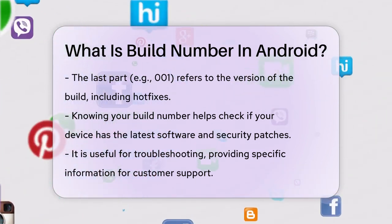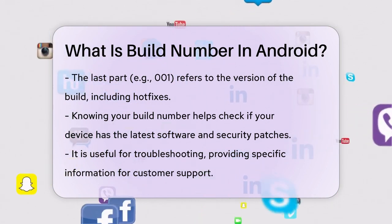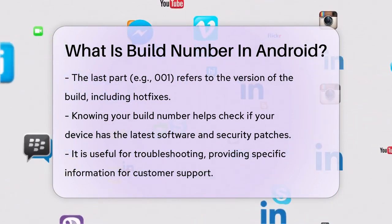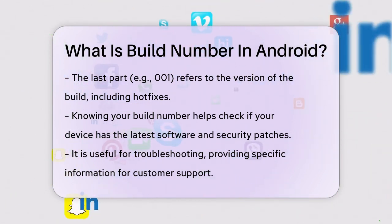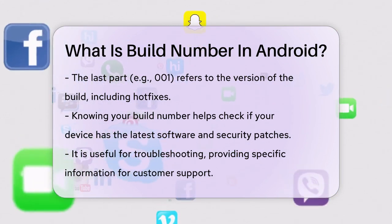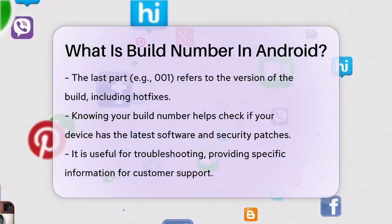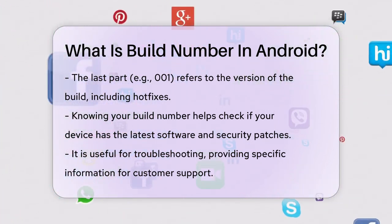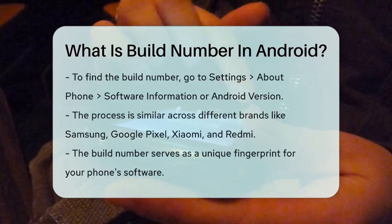To find the build number on your device, it's quite straightforward. For most devices, you open the Settings app, go to About Phone, and then select Software Information or Android Version. Here, you'll see the build number listed.